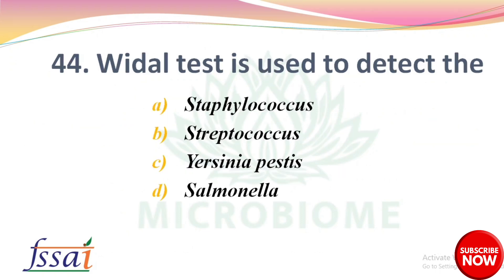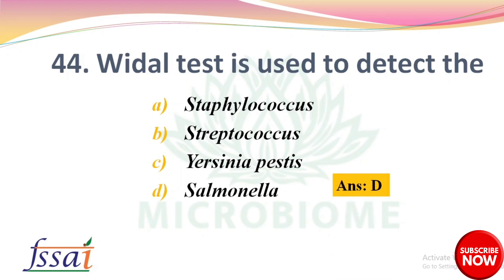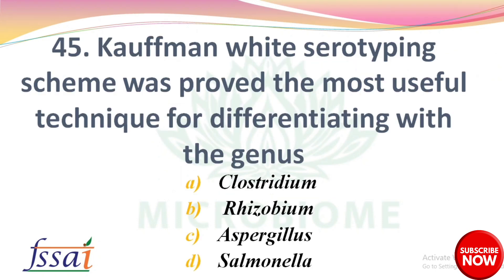Next: Widal test is used to detect — options: Staphylococcus, Streptococcus, Yersinia pestis, Salmonella. The right answer is option D, Salmonella. Next: Kauffmann-White serotyping scheme proved the most useful technique for differentiating within the genus of — options: Clostridium, Rhizobium, Aspergillus, Salmonella. The right answer is option D, Salmonella.